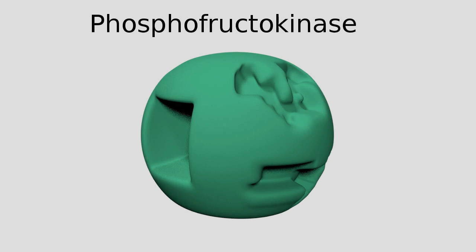I've created this model of phosphofructokinase. This is a very simplistic representation. The real phosphofructokinase is about 300 amino acids long, so its structure is really complicated. But for now, we're just looking at allosteric regulation. Here's the active site, and here are the allosteric sites.